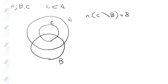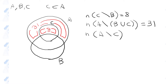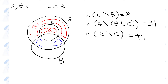First of all, the number of elements in set C but not in set B is 8. So in this diagram, this refers to this area here, because it is inside C but not inside B. The number of elements in set A but not in either B or C is 31, which would be this region here. The number of elements in A but not in C is 47. This region plus 31 is equal to 47, so this region here must be 16.